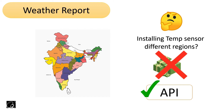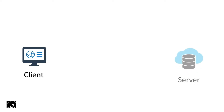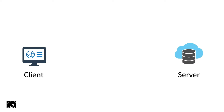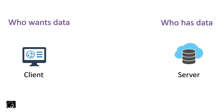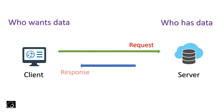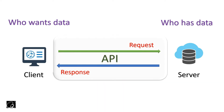We have a client on the left and a server on the right. The client is who wants the data and the server is who has the data. To get the data, the client sends a request to the server: 'Hey server, can you give me that data so I can use it in my application?' The server processes the request and gives back the data in the form of a response. This is the API - connecting the client to the server so they can communicate via request and response.